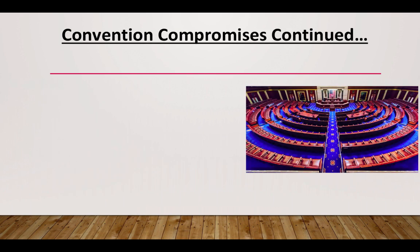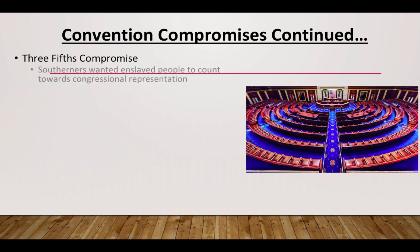Continuing our study of the Constitutional Convention compromises, we have to know the Three-Fifths Compromise. The issue of slavery comes up again — this institution continues to follow us through American history. Southern representatives wanted to count enslaved peoples towards congressional representation. The more people a state has within the House of Representatives, the more voting power and say they have within the legislative branch.